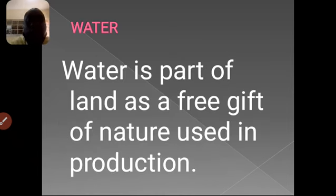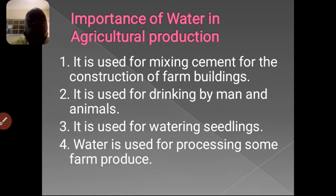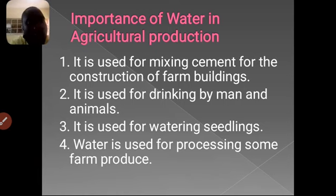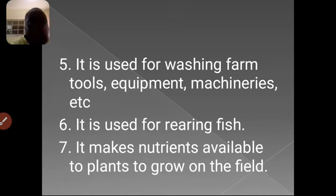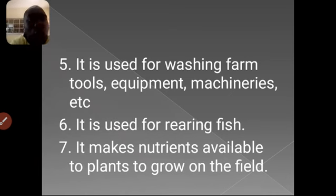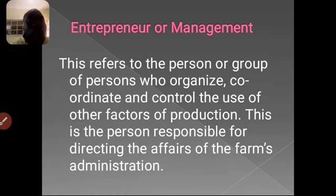Now we want to look at water. Water is very important when we are talking about production in agriculture. It is part of land, as stated earlier — a free gift of nature — and it can come in any form: as rain, from wells, streams, or oceans. The importance of water in agricultural production includes: we use it to mix building material when constructing farm buildings; water can be drunk by the farmer and by animals; we use water to supply irrigation to our seedlings; water is used for processing of some farm produce — for example, when processing cassava you use water to wash and to soak. It is used for washing of tools, equipment, and machines after use. Water can be used for rearing of fish, and it is also one of the nutrients necessary for the growth of plants.